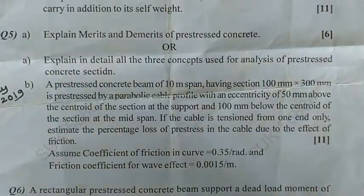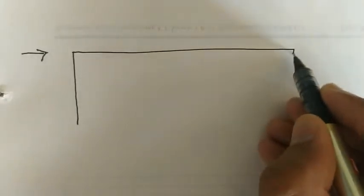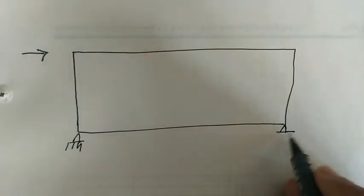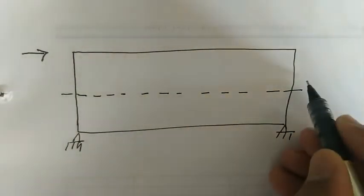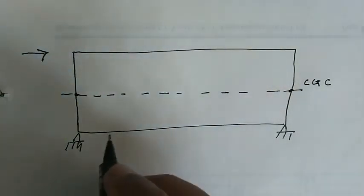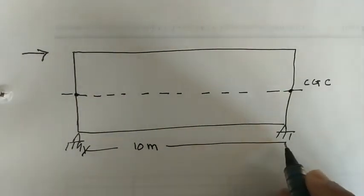Let us solve this question. First, we have to sketch the longitudinal section of the beam. This is the longitudinal section of the beam, which clearly shows the cable profile. This is one end, this is another end, and the span of the beam is 10 meters.